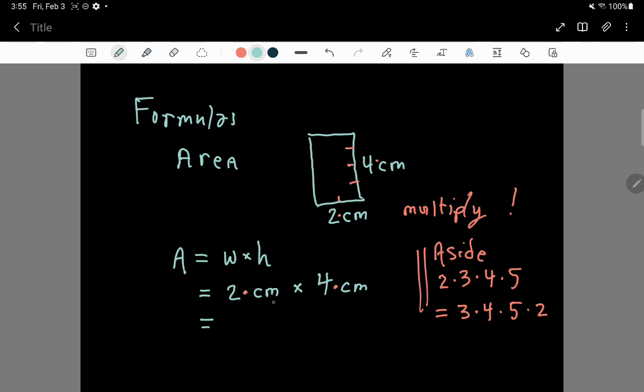I'm going to put the 2 and 4 nearby each other, and centimeters times centimeters nearby each other, and then I'll remember that I'm still multiplying all 4 of these things. So, 2 times 4, that's 8, and centimeters times centimeters, the easiest thing to do with this is to call it centimeters squared.